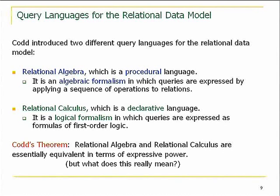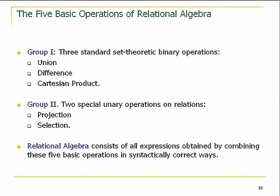Relational algebra is the set of expressions obtained by starting with a bunch of relations in your schema and closing them under five operations. The first three are perfectly general from discrete mathematics: union, set-theoretic difference — insisting that these are relations of the same arity — and Cartesian product. Then there are two special operations meaningful for relations: projection and selection.